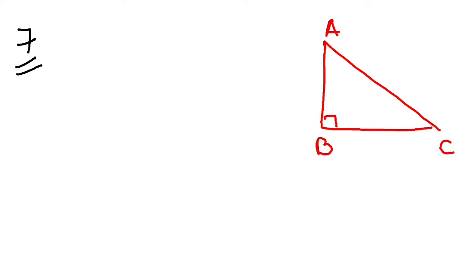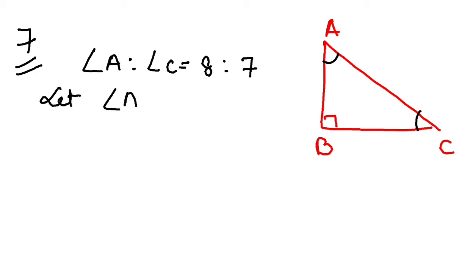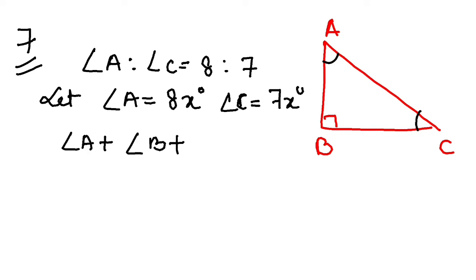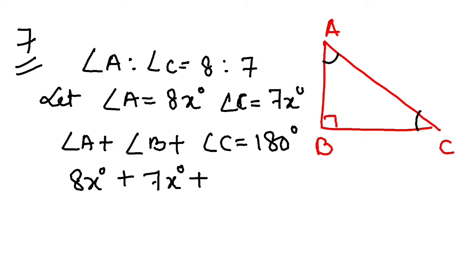Angles A and C are the two acute angles. Angle B is 90 degrees. The two acute angles are in the ratio 8:7. So I'll take angle A as 8x degrees and angle C as 7x degrees. The sum of all angles in a triangle: angle A plus angle B plus angle C equals 180 degrees.